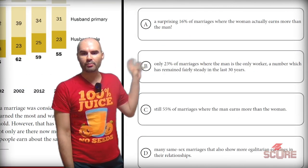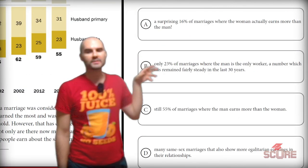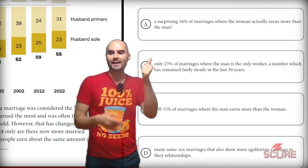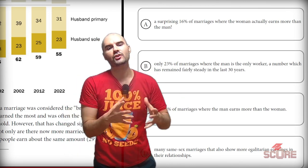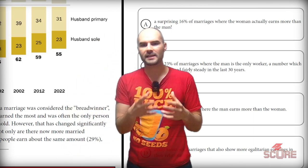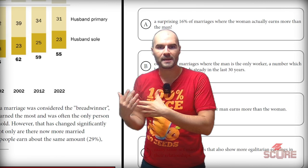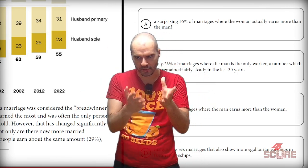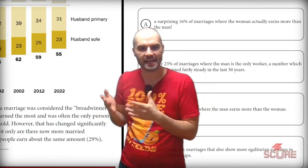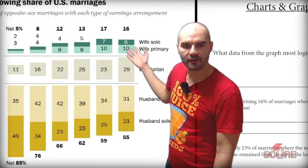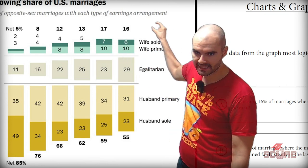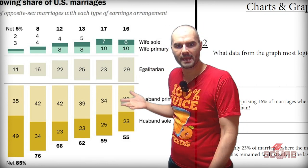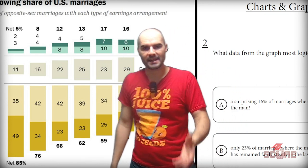Answer A says a surprising 16% of marriages are ones where the woman actually earns more than the man. This would contrast perfectly with the other statements in the paragraph and really show that progression. Let's take a look at the data — and sure enough, in 2022, I see 16% where the woman makes more than the man. A is my best answer.